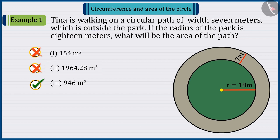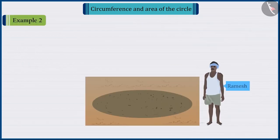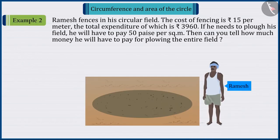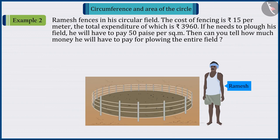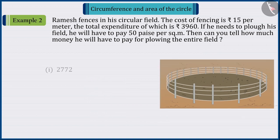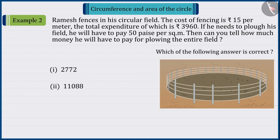Ramesh fences in his circular field. The cost of fencing is 15 rupees per meter. The total expenditure of which is 3,960 rupees. If he needs to plough his field, he will have to pay 50 rupees per square meter. Then, can you tell how much money he will have to pay for ploughing the entire field? Which of the following answer is correct? Pause the video to solve the question and then match your answer.